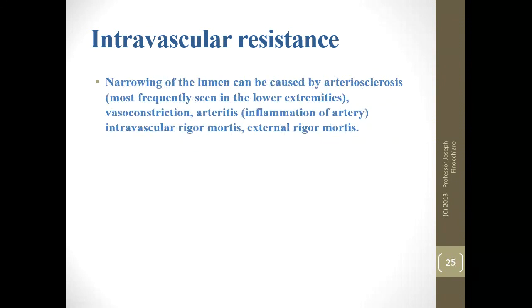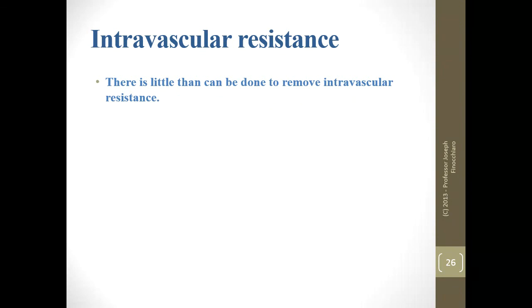The lumen can be narrowed by arterial sclerosis — most commonly seen in the lower extremities — by vasoconstriction, arteritis which is inflammation of the artery, and intravascular rigor mortis. The small muscles surrounding arteries go into rigor under Nysten's law just like the large muscles of the body. If intravascular rigor is present, there is little you can do except go around it.